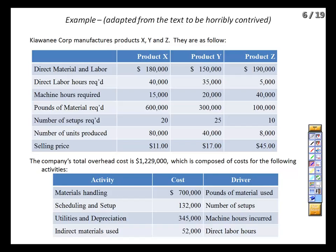Here's our horribly contrived example to prove the point — results are not typical, actual results may vary. We have three products, and we're told what our direct labor and material costs are. The more interesting stuff is the drivers that we're going to use for our overhead application — that's where we're going to find the distortions.